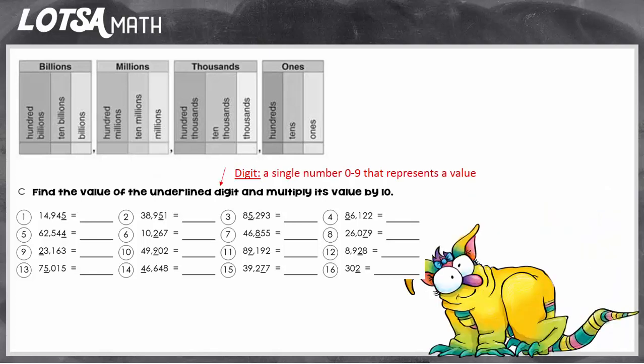Remember, a digit is a single number 0 to 9 that represents a value, and then you're going to multiply it, which means to make it bigger a certain number of times. In this case, you're going to multiply it by 10, so you're going to make it bigger 10 times.